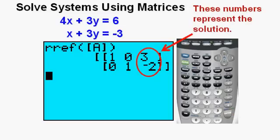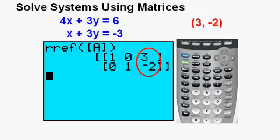This is matrix A in reduced row echelon form. The key numbers are the ones on the right of the matrix. The 3 means that for the solution the value of x is 3 and the negative 2 means that the value of y is negative 2. Let's write down the solution of 3, negative 2 before checking.